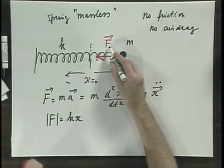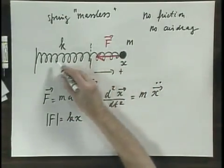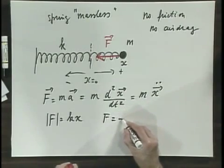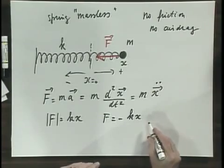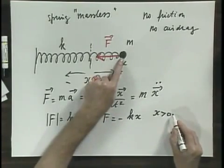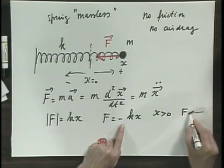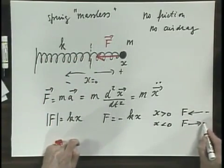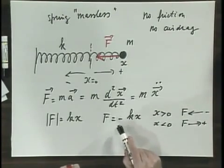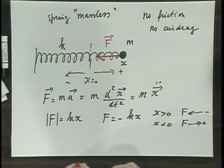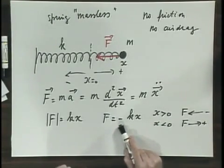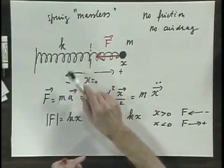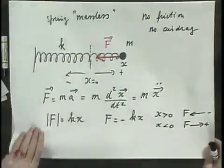But F is a vector — it has a magnitude and a direction. Since this is a one-dimensional problem, I can simply remove the vectorial notation and write F equals minus kx. Notice that when x is positive, automatically F will be negative. And when x is negative, the force will be positive. So this minus sign takes into account the fact that F is a vector. The minus sign indicates that there is a restoring force: if x is positive or negative, it wants to bring it back to equilibrium.